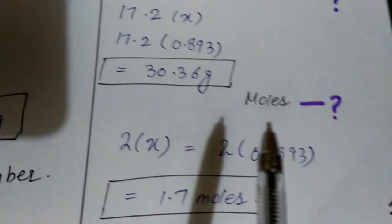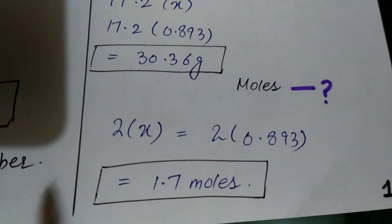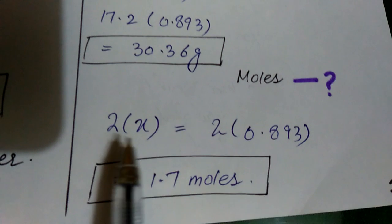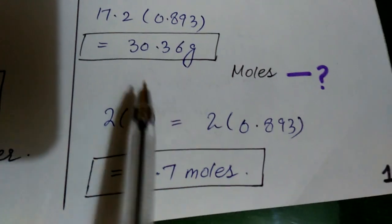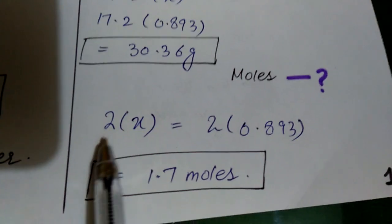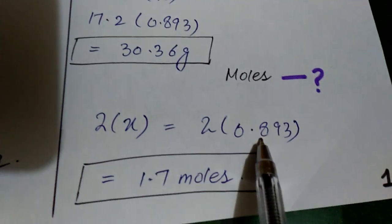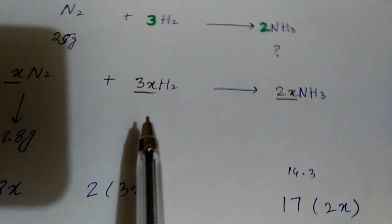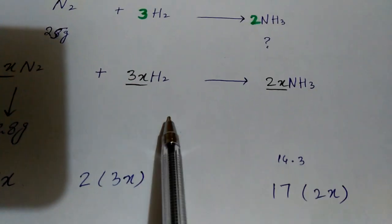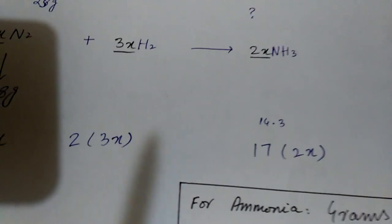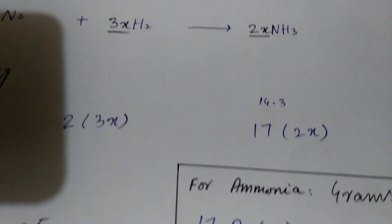If they ask for the number of moles, we just use the coefficient — we write 2x for ammonia. For hydrogen, we would write 3x. We put in the magic number and we get the number of moles they asked for.